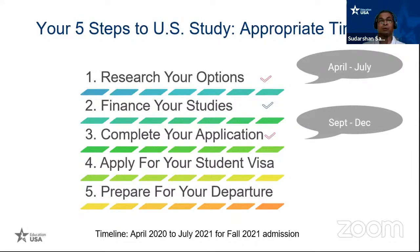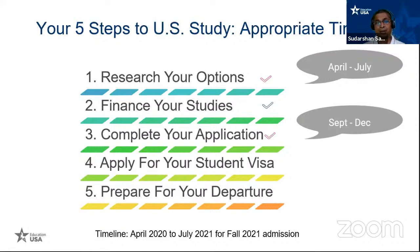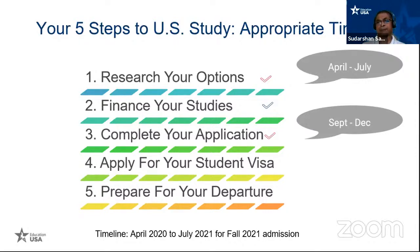The outcome of your admission applications depends heavily on two steps: researching your options and completing your applications. The best timing for researching options is April to July, and for completing applications it is September to December. Generally, application deadlines start from the first week of December, so you need to complete your applications by that time.